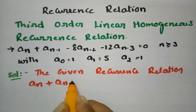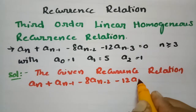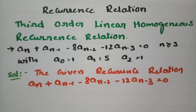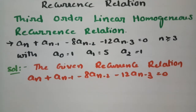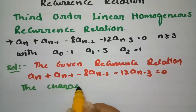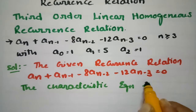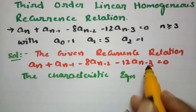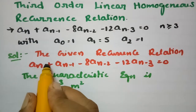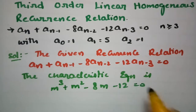The given recurrence relation is a_n plus a_(n-1) minus 8 times a_(n-2) minus 12*a_(n-3) is equal to 0. We have to write the characteristic equation. This is of order 3, so the characteristic equation is m^3 plus m^2 minus 8m minus 12 is equal to 0.